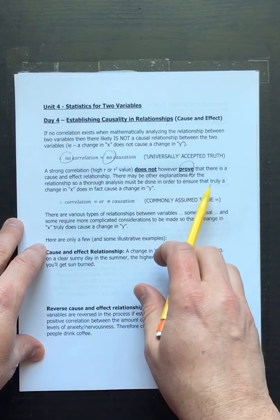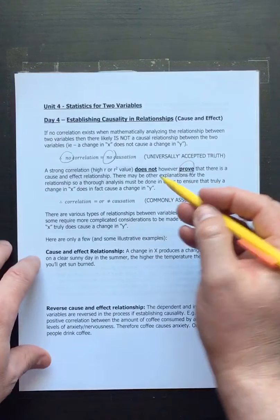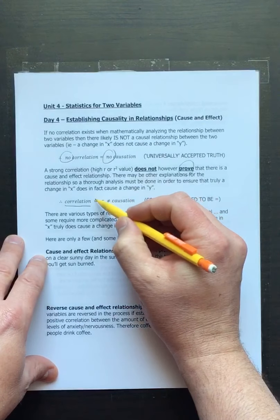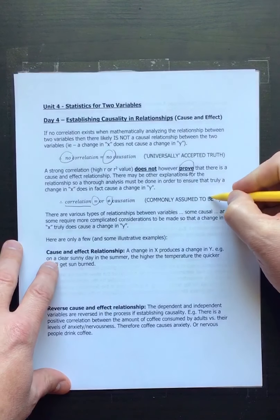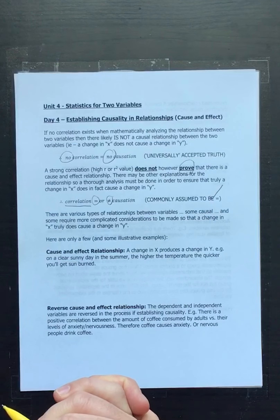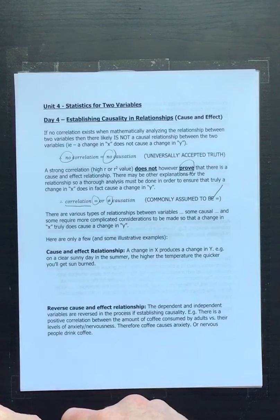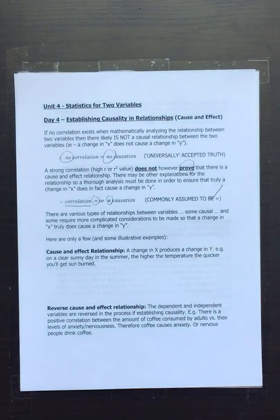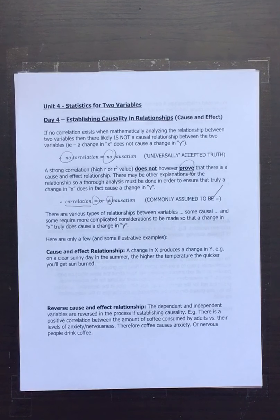A thorough analysis must be done to ensure that a change in x truly does cause a change in y — a correlation can or cannot equal causation depending on the analysis. When we gather more mathematical evidence from different perspectives and studies, it may suggest causality, but something could still be hiding in the background due to flawed experimental design or other factors.